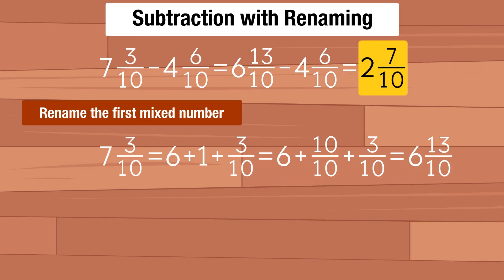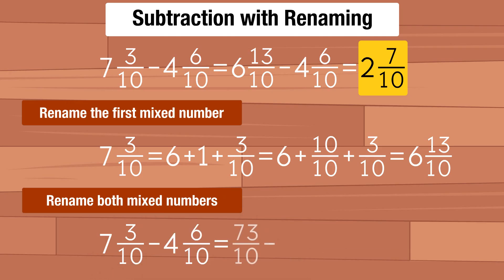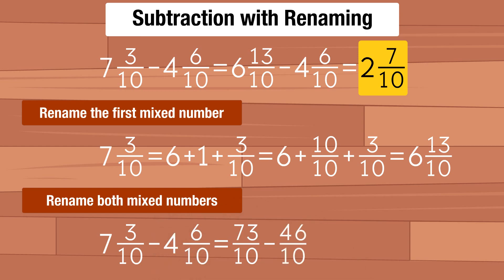Now let's try the second option: renaming both mixed numbers. We need to write both mixed numbers as improper fractions. 7 and 3 tenths becomes 73 over 10, and 4 and 6 tenths becomes 46 over 10. Now we subtract and we get 27 over 10. The final answer needs to be a mixed number, so we get 2 and 7 tenths.